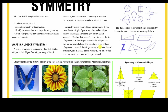There are three lines of symmetry: vertical lines of symmetry, horizontal lines of symmetry, and diagonal lines of symmetry. An object that is not symmetrical is said to be asymmetrical.